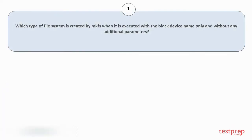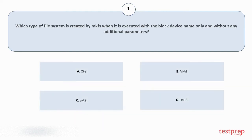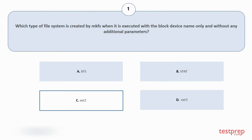Question number 1: which type of file system is created by MKFS when it is executed with the block device name only and without any additional parameters? The correct answer is option C.